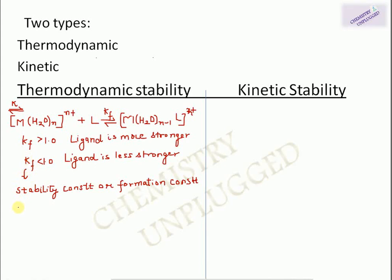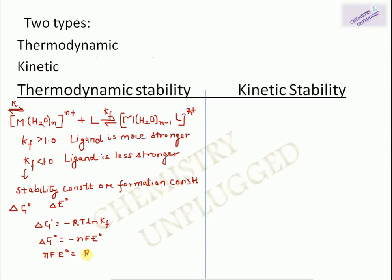Kf is also related to ΔG° and E°. ΔG° = −RT ln Kf, and ΔG° = −nFE°. So we can relate Kf with E° through the equation nFE° = RT ln Kf. If ΔG° is highly negative, the reaction is favored in the forward direction.